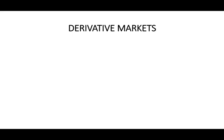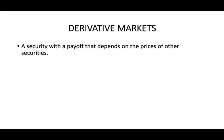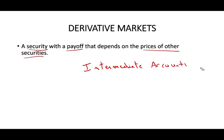What is a derivative? A derivative is a security with a payoff that depends on the price of another security. Let me give you a simple example. Let's assume next semester you need to take a course called Intermediate Accounting. Let's assume you are an accounting and finance major and you need to take this course next semester.